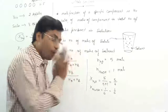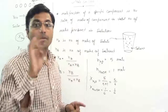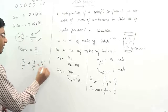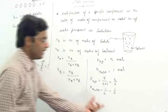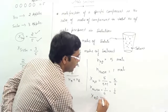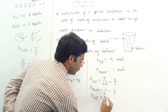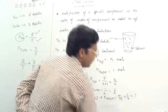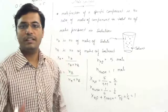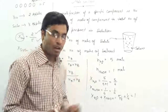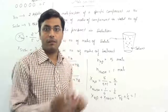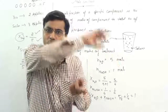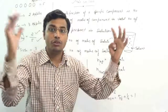Since mole fraction is a ratio, it does not have any unit. Also, the sum of all mole fractions is always equal to 1. You can see here: 2 by 5 plus 3 by 5 equals 5 by 5 equals 1. Similarly, if we add the mole fractions of all components present in solution, the sum is always 1. So mole fraction is just a ratio of number of moles of a component to the total number of moles present in solution.